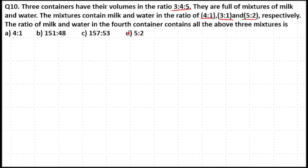The ratio of milk and water in the fourth container contains all the above three mixtures. We have milk and water in the first vessel in ratio 4:1, second vessel 3:1, third vessel 5:2. So 4+1=5, 3+1=4, and 5+2=7 total parts.